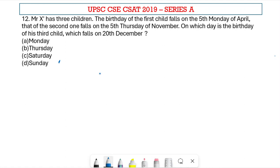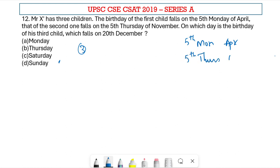Welcome to Aptitude Destination. Please pause the video and read the question completely. Mr. X has three children. The birthday of the first child falls on the 5th Monday of April, and that of the second one falls on the 5th Thursday of November. On which day is the birthday of his third child, which falls on 20th December?